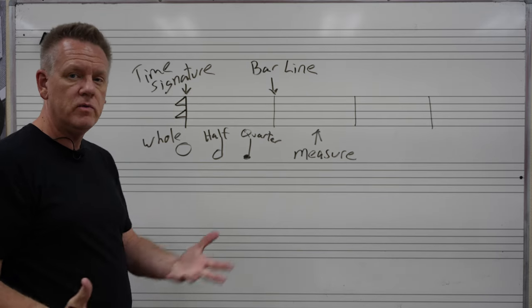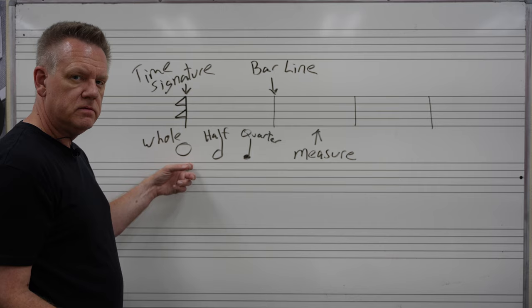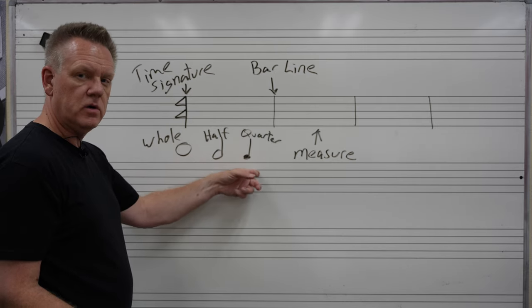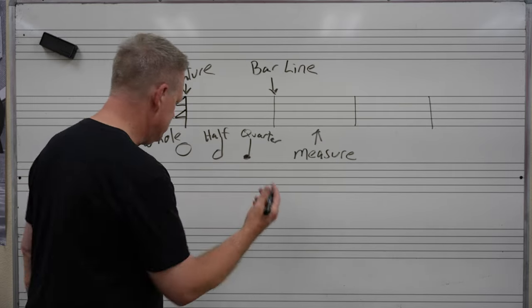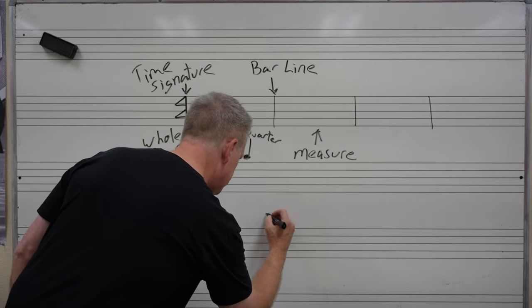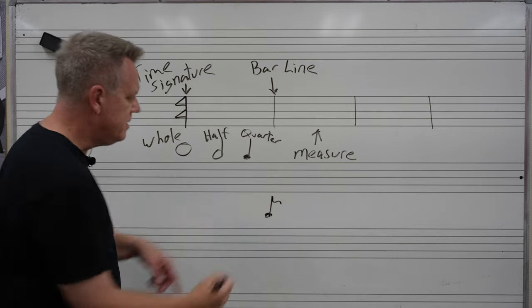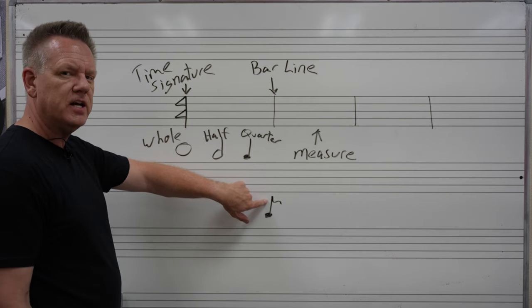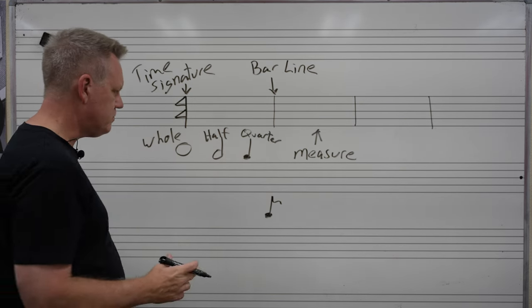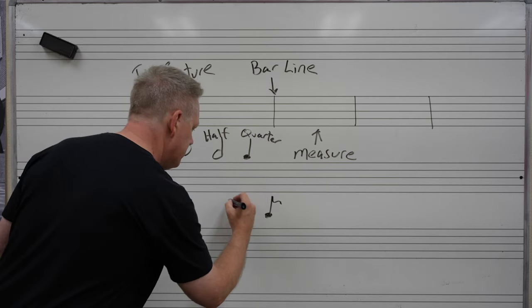If we go one more, we get an eighth note. So, right now, we have a whole note, we have a half note, we have a quarter note. Eighth note would look like this. I'm going to draw it right here. An eighth note is a solid dot stem with a flag on it. A single flag. So, we have a whole note, a half note, a quarter note, and an eighth note.